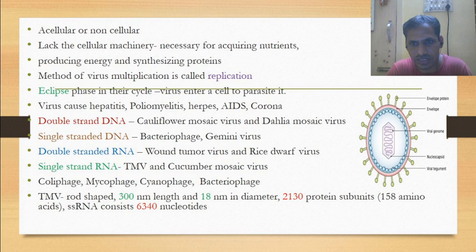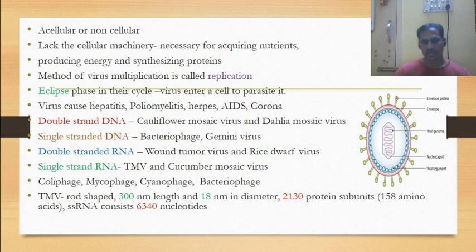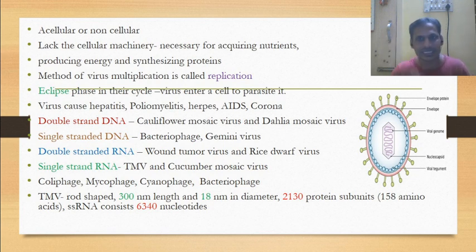TMV — tobacco mosaic virus — is rod-shaped. Its length is 300 nanometers and width (diameter) is 18 nanometers. TMV is made up of 2100 protein subunits called capsomeres. Each capsomere contains almost 158 amino acids. TMV's genetic material is single-strand RNA consisting of 6340 nucleotides. Each helical turn contains approximately 16 capsomeres.